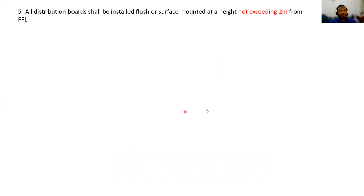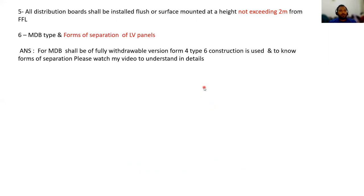Question five: all distribution boards shall be installed flush or surface mounted at a height not exceeding 2 meters from the finished floor level. For MDB type and forms of separation of LV panels, the main DB shall be fully withdrawable version, Form 4, Type 6 construction. For details on forms of separation, please watch my earlier video on segregation of LV panels.